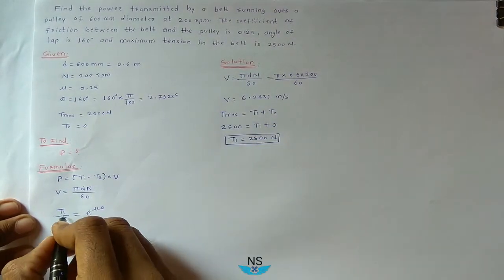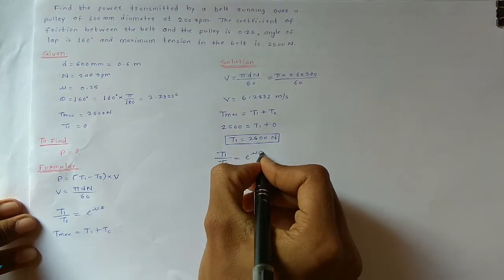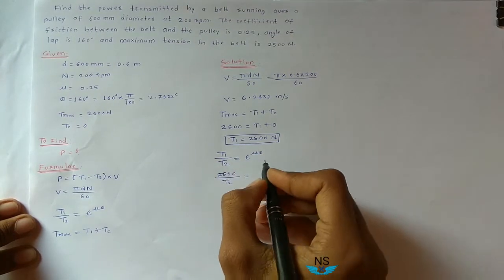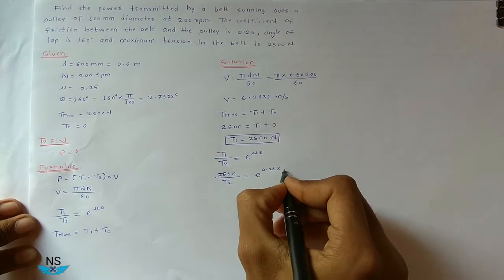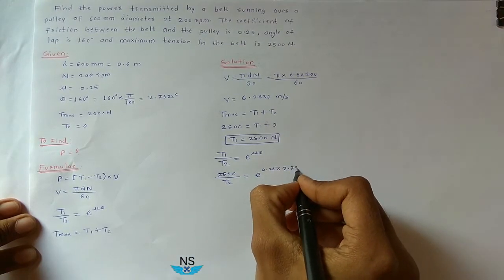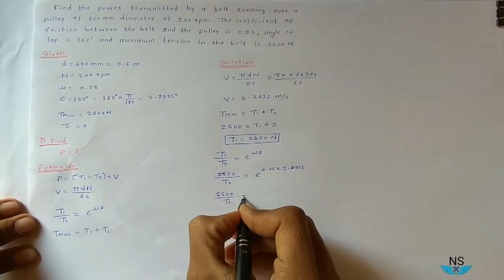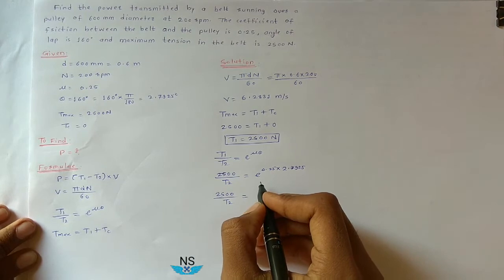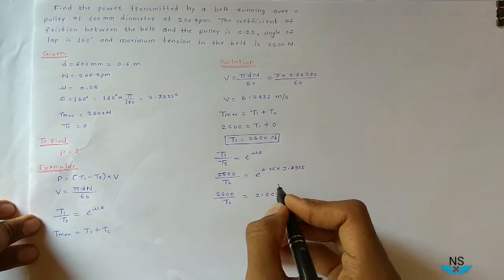Then find T2 from tension ratio. T1 divided by T2 is equal to e raised to mu theta. So T1 is 2500 divided by T2 is equal to e raised to mu is 0.25 into theta 2.7925. 2500 divided by T2 is equal to... tension ratio becomes 2.0099.